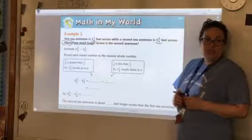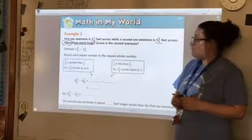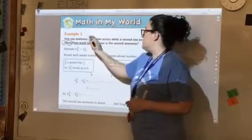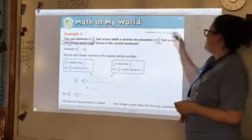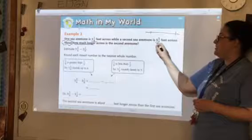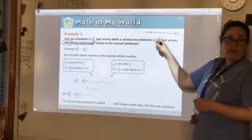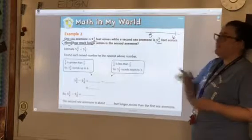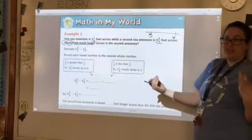So this is cluing me in to do subtraction and estimating. So I need to think about five and three-fourths. Or first, yeah. So what two numbers is five and three-fourths between? My first number is going to be this one. What do you think, Asia? Five and six. Is three-fourths making it closer to five or six, Noah?